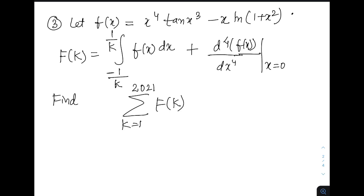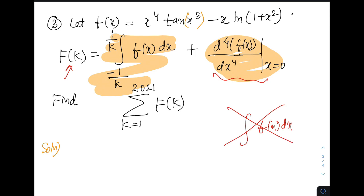Let us move to the third problem. f of x equals x to the power 4 times tan of x cubed minus x ln of 1 plus x squared. We define a capital F of k which is integral f of x dx from minus 1 by k to 1 by k plus the fourth derivative d to the 4 f by dx to the 4 at x equal to 0. Find the sum of capital F of k from k equals 1 to 2021. Clearly by looking at the problem, before we go and try to integrate this function which looks very clumsy.